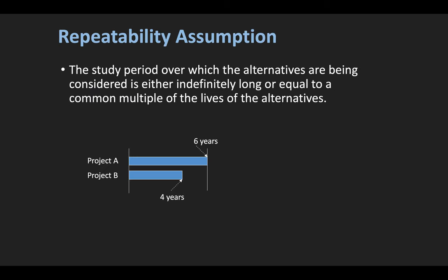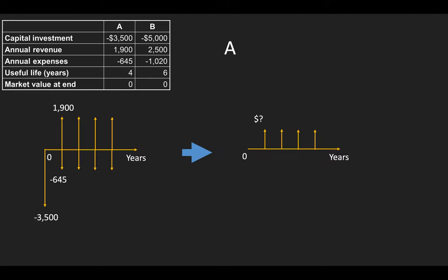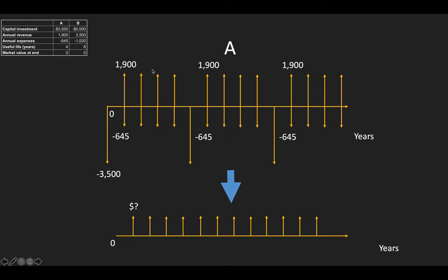Another way to verify this is to extend the project to a certain year so all projects end at the same time. We repeat project A three times to get 12 years. But there's a problem with a naive repetition: if we simply stack the cash flows, we might count 15 years instead of 12. The reason is that when the previous project finishes, the next project's capital investment starts immediately at that endpoint — not one period later.